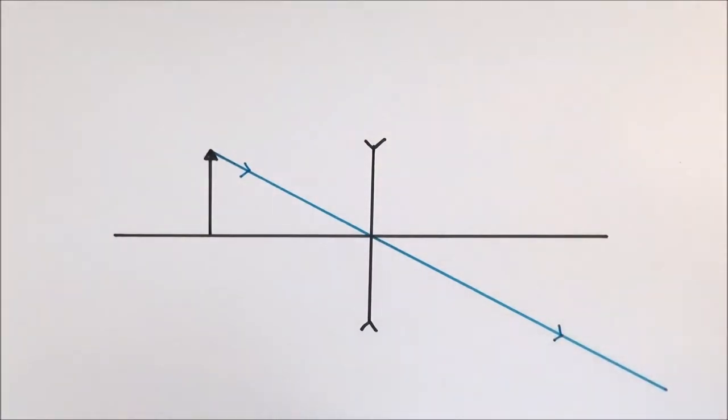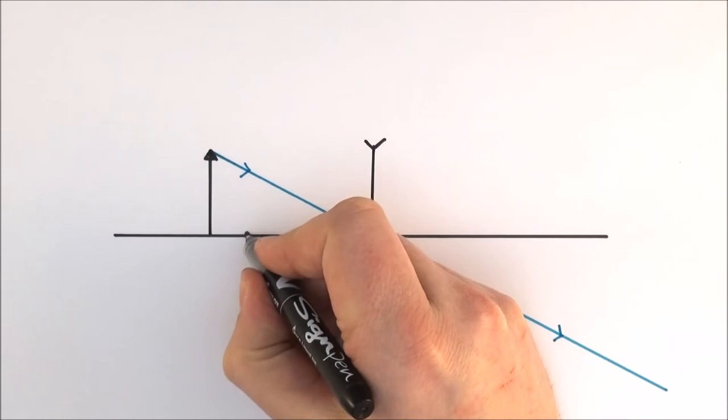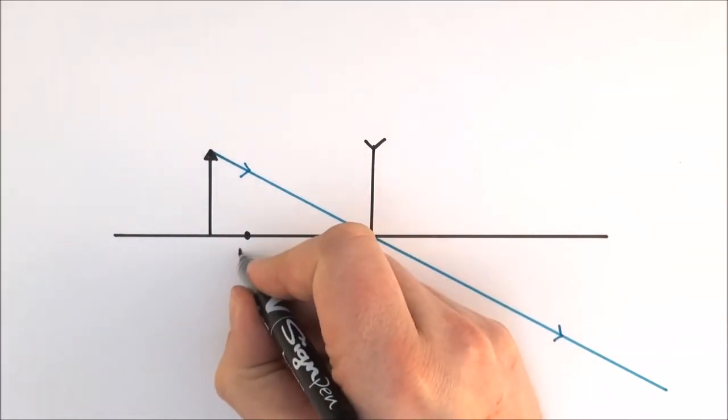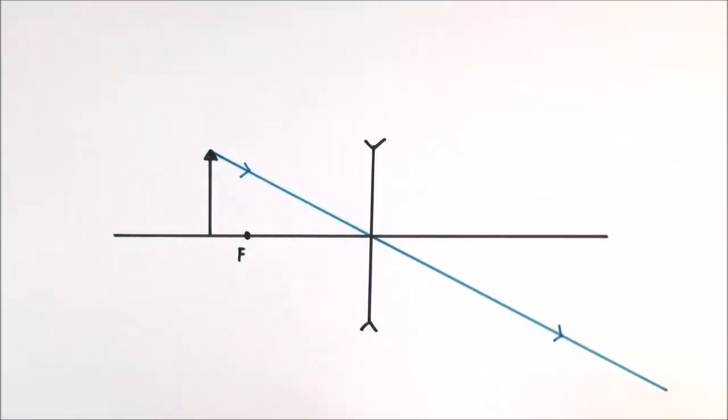All pretty straightforward there. I probably should have put the focal point. So this is where the focal point is of that lens, where the rays of light appear to diverge from.